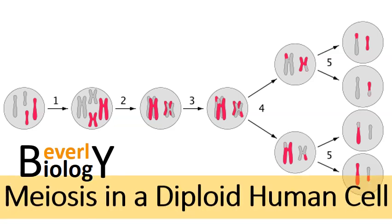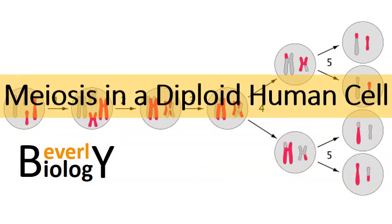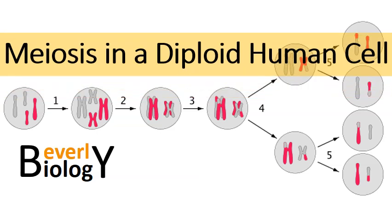Okay, so in this video we're going to look at the process of meiosis as it proceeds through a diploid human cell. So let's go ahead and get started.